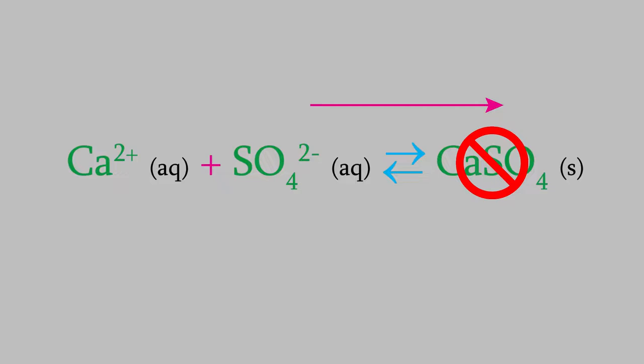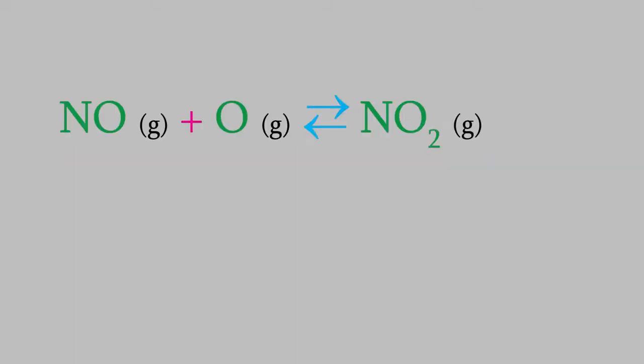There's one more interesting way that Le Chatelier's Principle can affect the direction of a chemical reaction. Suppose we have the following reaction, which is an exothermic reaction. Just like any other reversible reaction, Le Chatelier's Principle tells us that the reaction will change direction if we add or remove one of the chemicals.